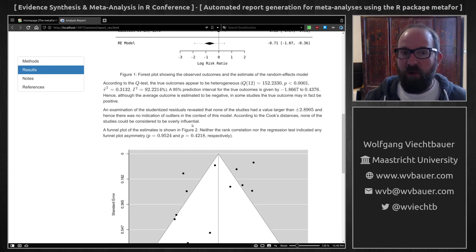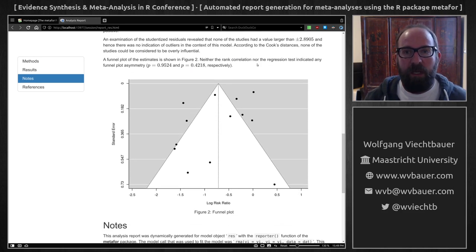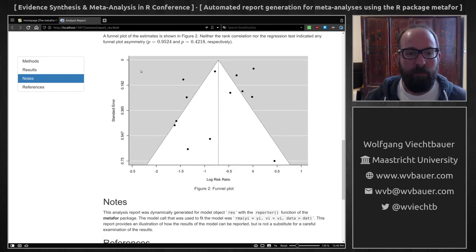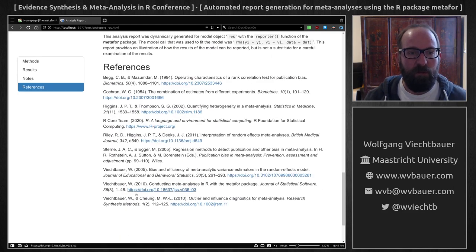We have no indication in these data that there may be outliers. Then we get a funnel plot and we get the results from the rank and regression test for funnel plot asymmetry. And then some notes down here and references for all of the methods used.